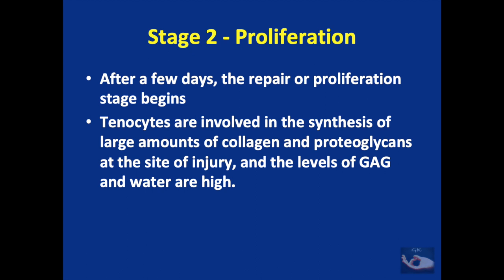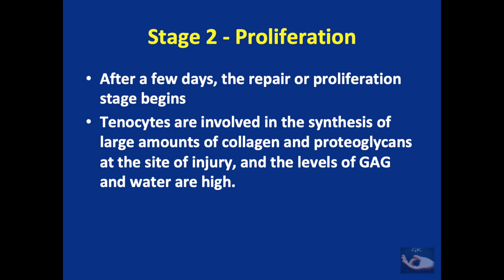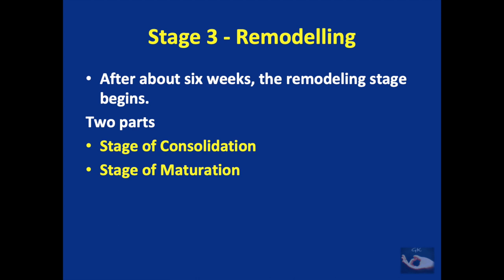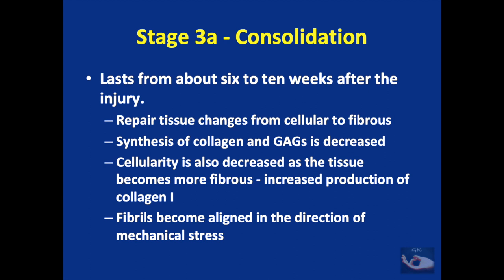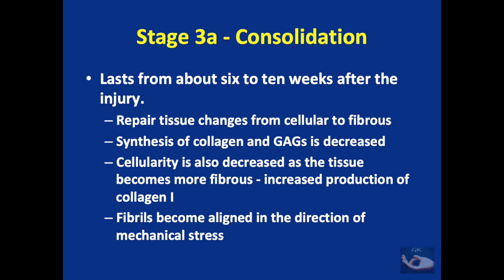The second stage — proliferation — can start as early as 3 days and extends up to 4 weeks, helping the tendon edges unite with the help of surrounding tissues. Tenocytes synthesize large amounts of collagen and proteoglycans at the site of injury, and levels of glycosaminoglycans and water are very high. After about 6 weeks, the remodeling stage begins. It consists of two parts: consolidation and maturation. The consolidation stage lasts up to 10 weeks; repair tissue changes from cellular to fibrous, synthesis of collagen and glycosaminoglycans decreases, cellularity decreases, and production of type 1 collagen increases. Fibrils become aligned in the direction of mechanical stress.